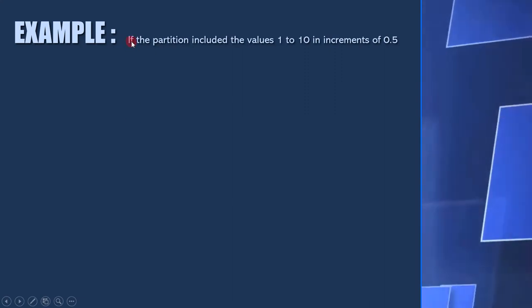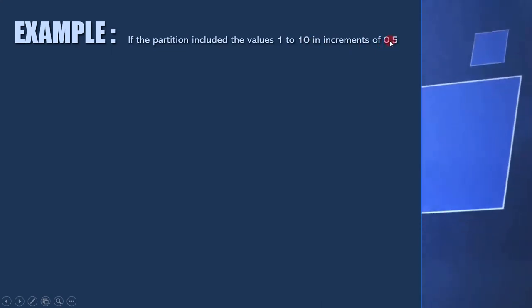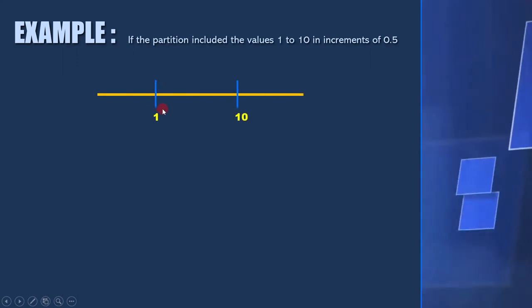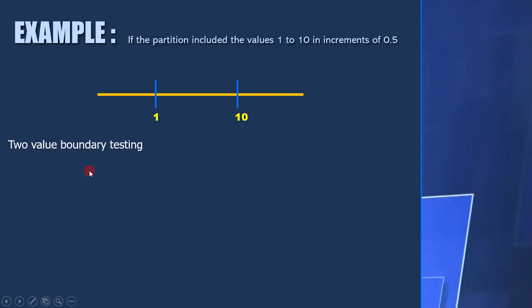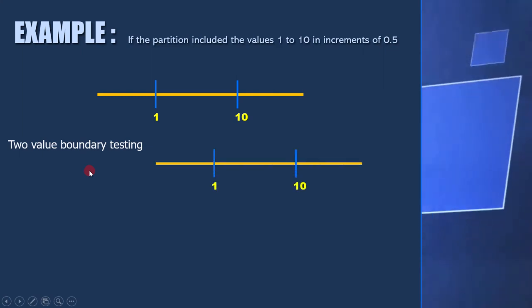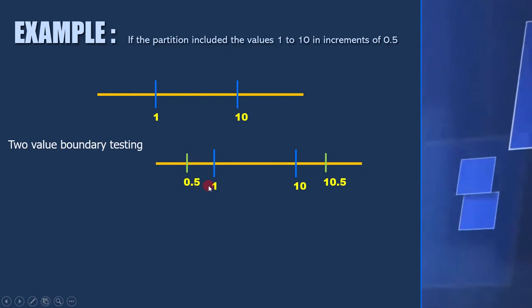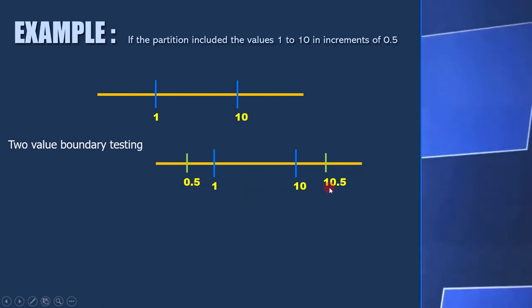Suppose the requirement is a field accepts the values 1 to 10 in increments of 0.5. For this requirement, this is our boundary analysis diagram. Now let's draw two-value boundary testing diagrams. Since the increment value is 0.5, we need to take one value outside 1 and it will be 0.5. The other value is 10.5.